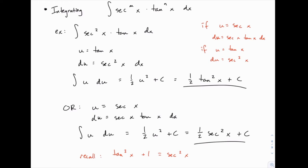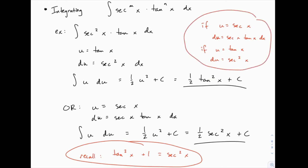For this first example, we didn't have to use the identity. But in other examples we'll see in a moment, this identity will come in handy as we set up our u-substitution. Always think through both options: u equals secant or u equals tangent, consider what du will be in each case, and see if it works — possibly with this trig identity added into the mix.